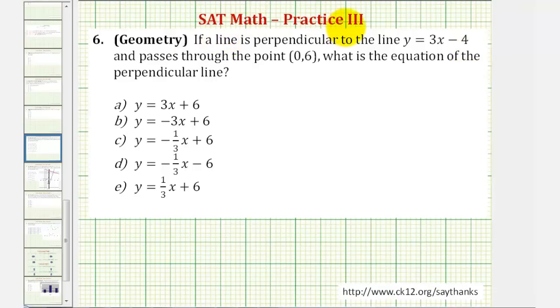Welcome to a practice SAT math question. If a line is perpendicular to the line y equals 3x minus 4 and passes through the point (0,6), what is the equation of the perpendicular line?